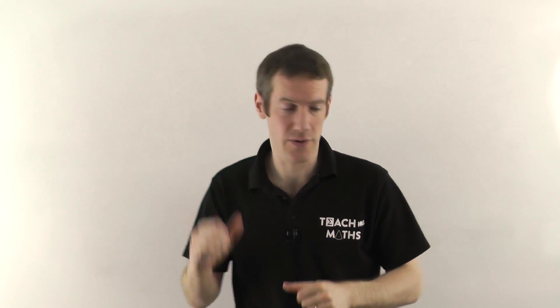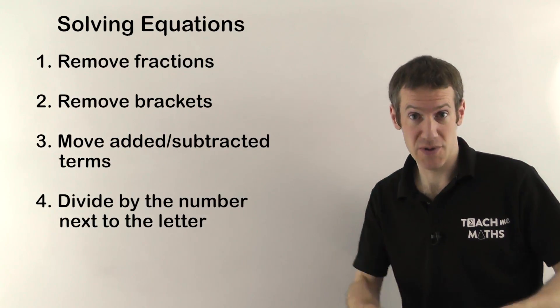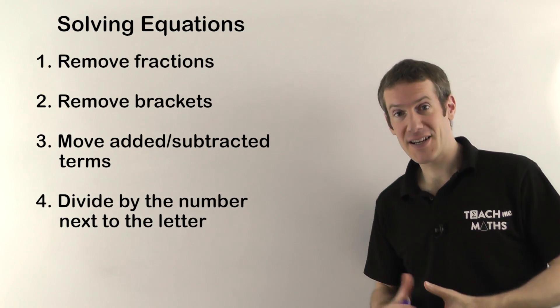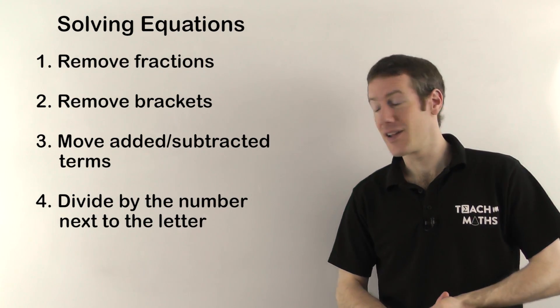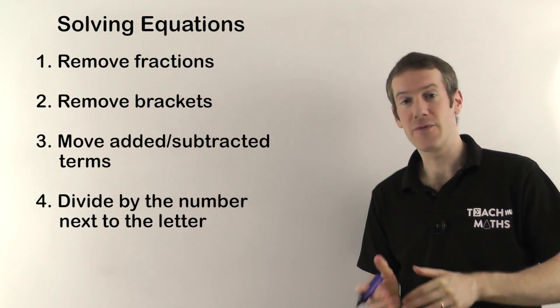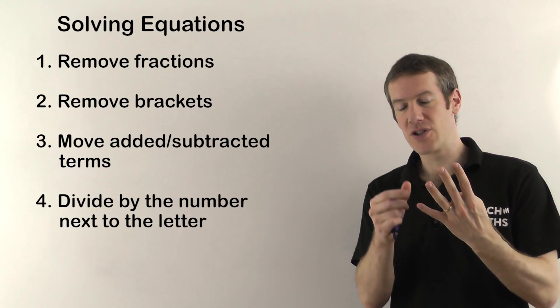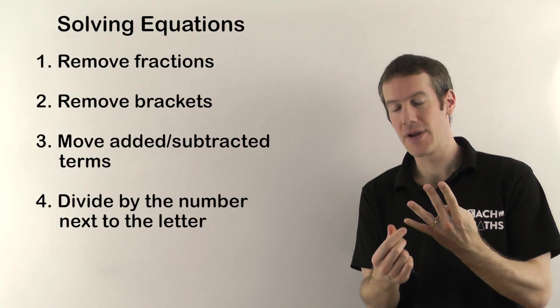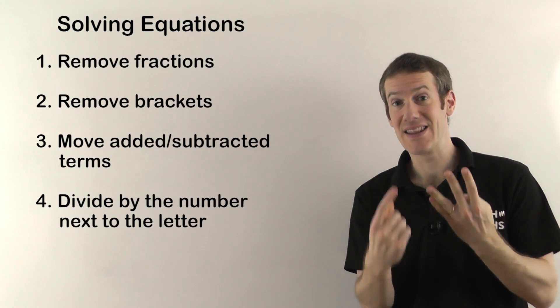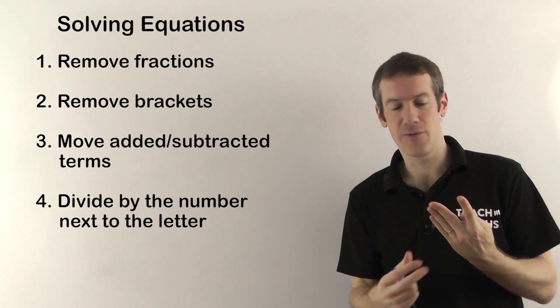We're following the same four steps we use when solving equations to transpose or rearrange equations. Step one: remove fractions. Step two: remove brackets. Step three: move added or subtracted terms. Step four: divide by the number next to the letter. Videos 1 and 2 covered steps 4 and 3. This video includes equations with brackets, and the final video — video 4 — will also have fractions.